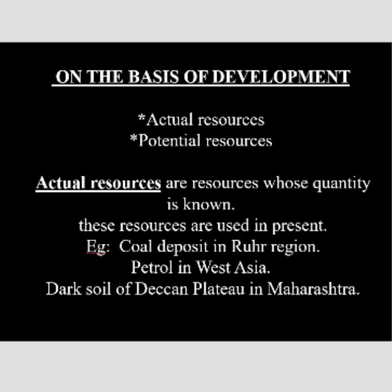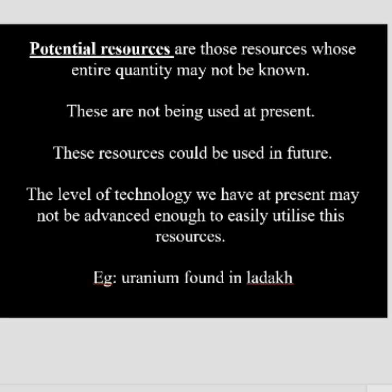On the basis of development, resources can be classified into two types: actual resources and potential resources. Actual resources are those whose quantity is known and are used in the present. Examples include coal deposits in the Ruhr region, petrol in West Asia, and dark soil of the Deccan Plateau in Maharashtra. In other words, actual resources are those whose quantity we know and which we use at present.